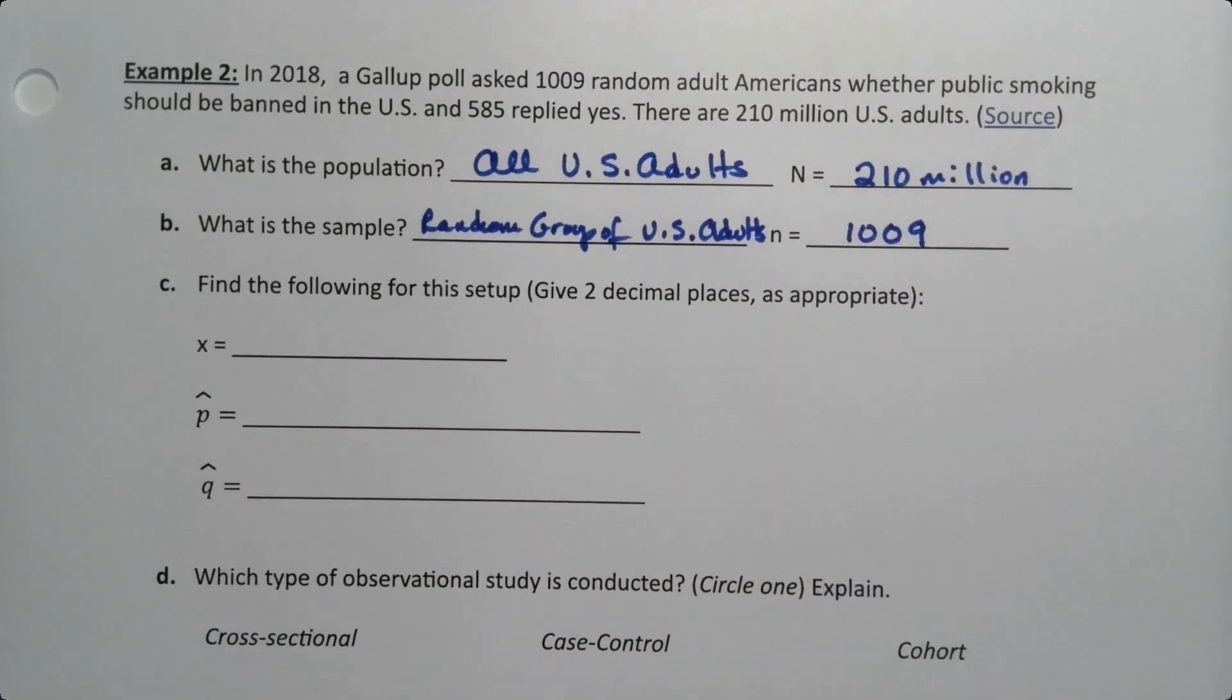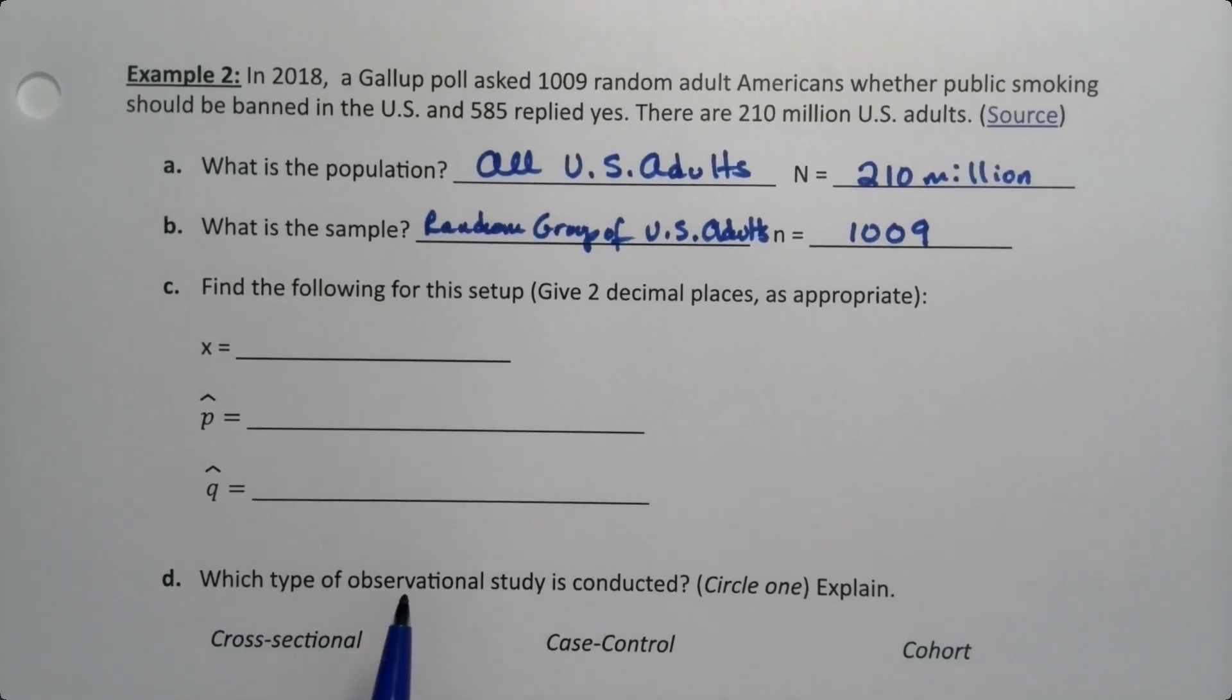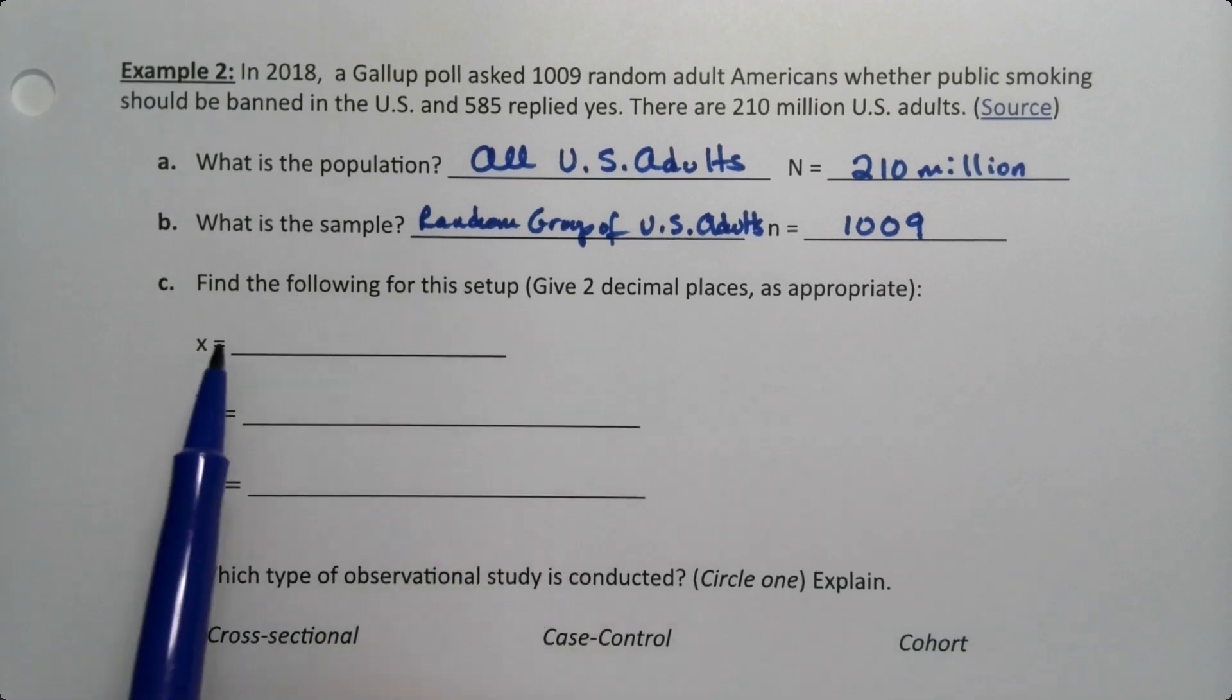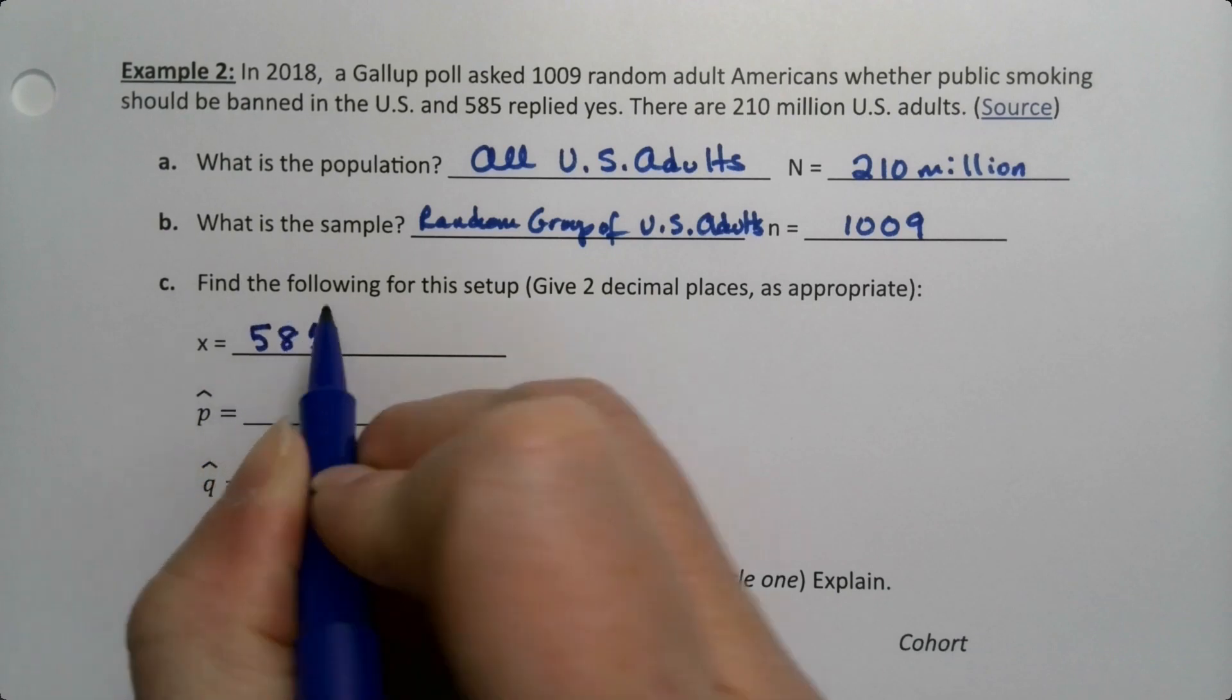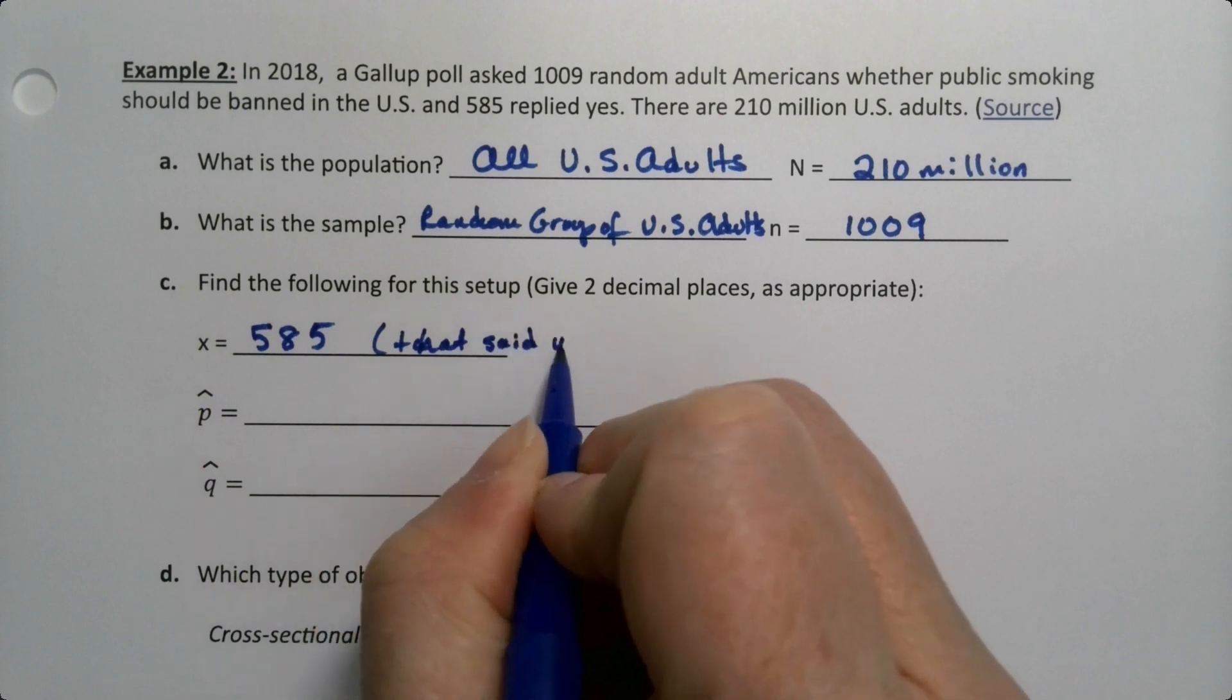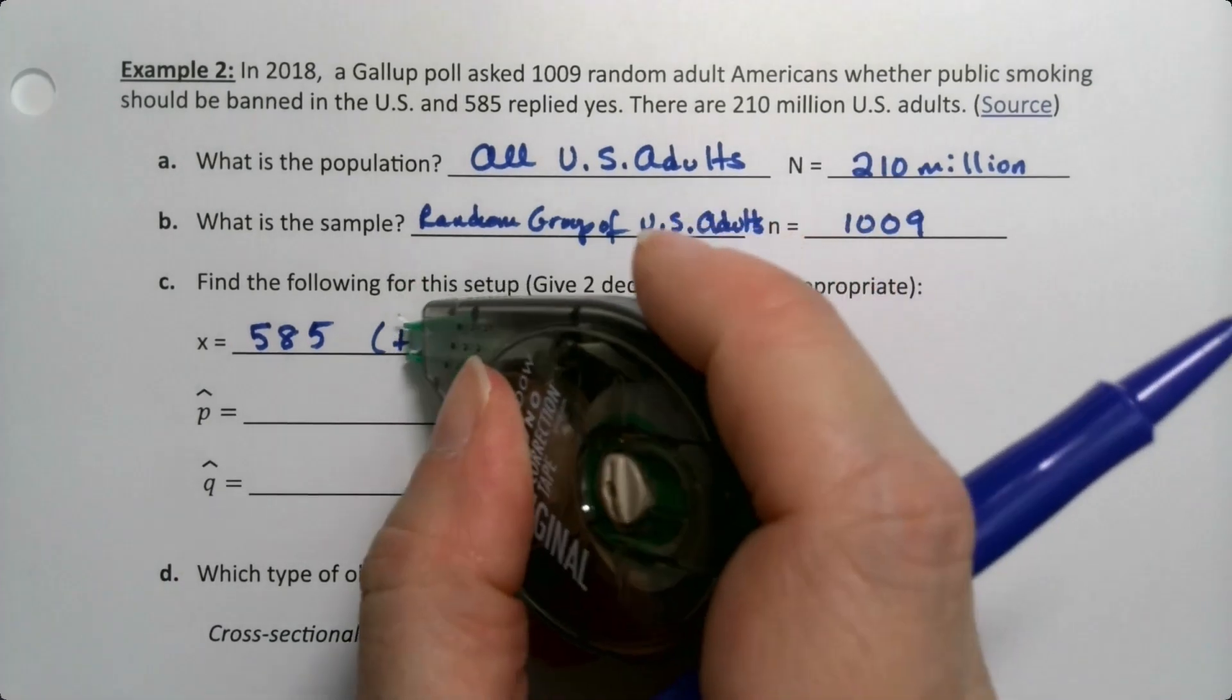Now let's find the following: X, p̂, and q̂. All right, well X is the number that are our successes, the number that say yes, for example. So X is the 585. I'll just put that said yes. It's the number of successes that we learned about in chapter 6.